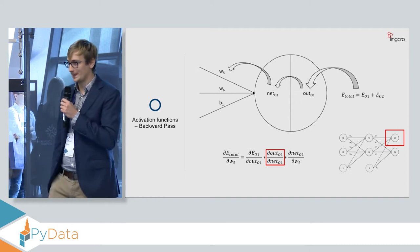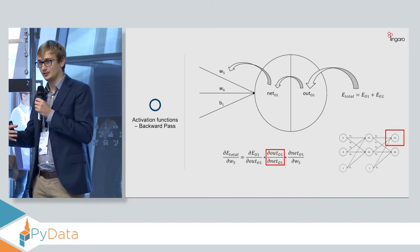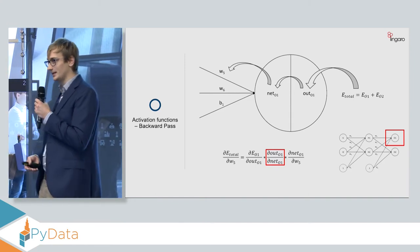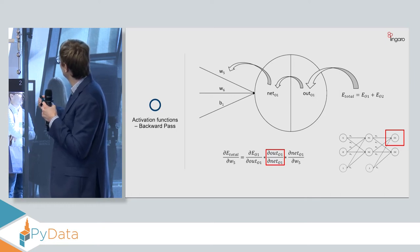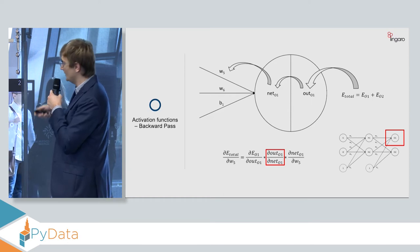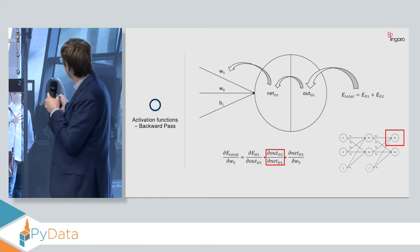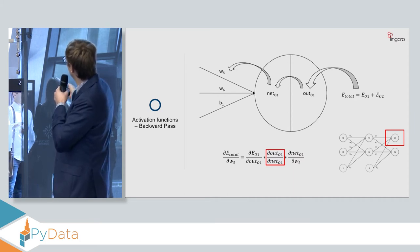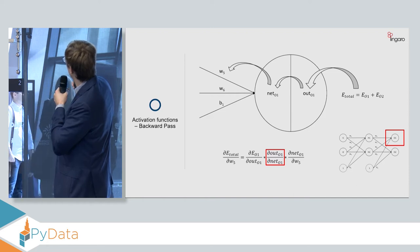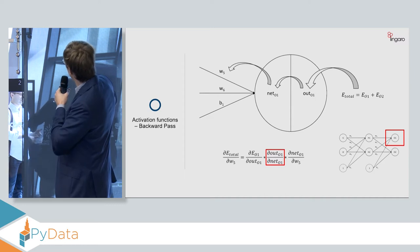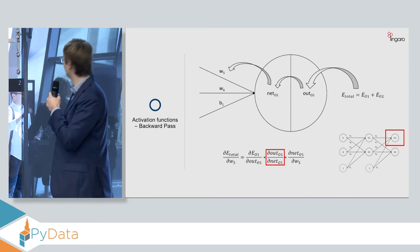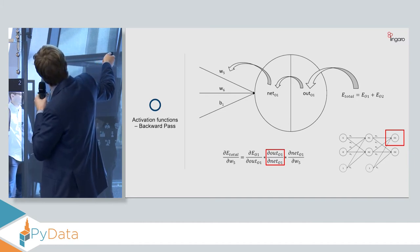So going into the backpropagation algorithm. The intuition behind this is that we want to update the weight in such a way that we minimize the error of the function. And this is done through backpropagation, so the calculation of the gradient. We want to know what's the impact, the influence of changing weight, in this case, this example weight five on the value of total error. And we can do this using the chain rule.